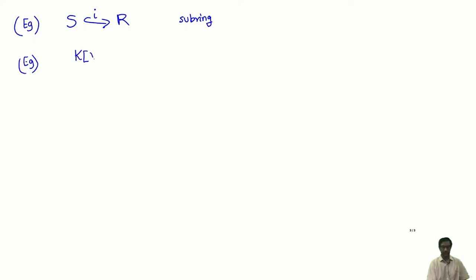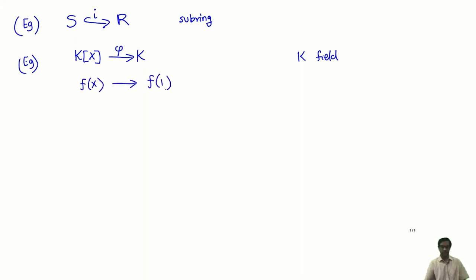Let me give an instance of the general definition. Suppose S is the ring K[X] — the ring of polynomials — and R is just the ring K, the field. I take R to be K and S to be K[X], and I define a homomorphism from K[X] to K. What sort of homomorphism? I can take the evaluation map: given any polynomial, I evaluate it at some element of the field K — for example at 1. It is easy to check that this evaluation map is a ring homomorphism.